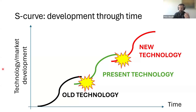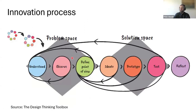The pattern continues as new technologies emerge, creating a sequence of S-curves, each representing the birth of a new innovation and eventual transition to more advanced solutions. At universities, researchers are creating future technologies and knowledge that will shape the world of tomorrow. To be better at innovation, we can use systematic processes — like research methodology, following a structured sequence gives you better chances of success.